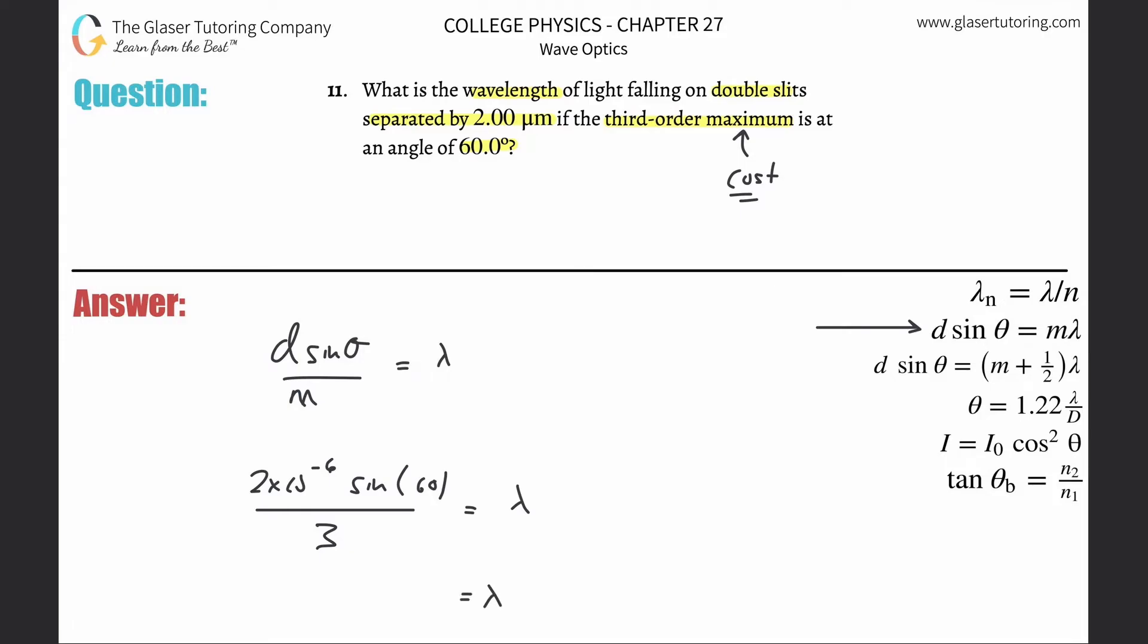So, check out number 9. And now let's multiply 2 times 10 to the minus 6 multiplied by sine of 60, then divide it by 3, and what in the world do we come to? We come to 5.77 times 10 to the minus 7 meters. That, my friends, is the wavelength.